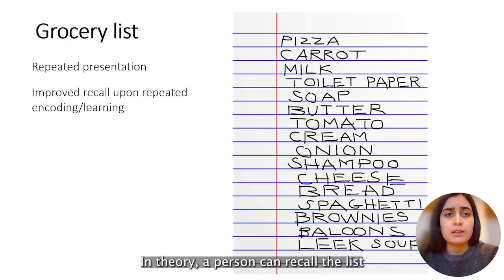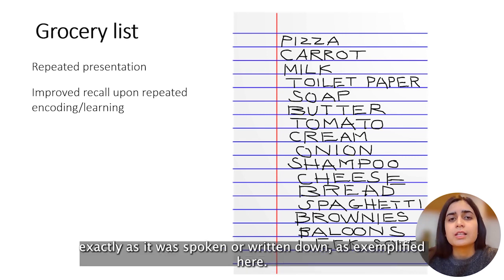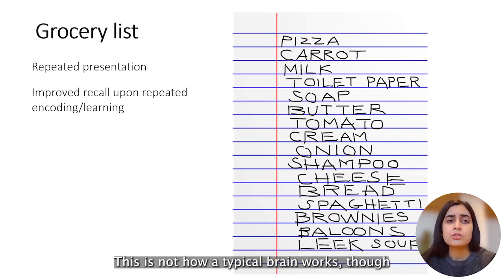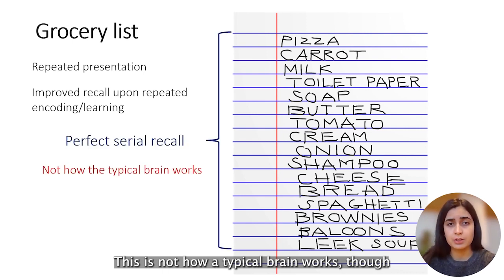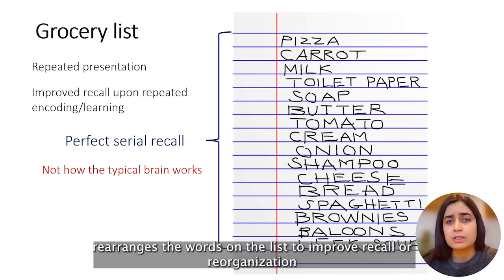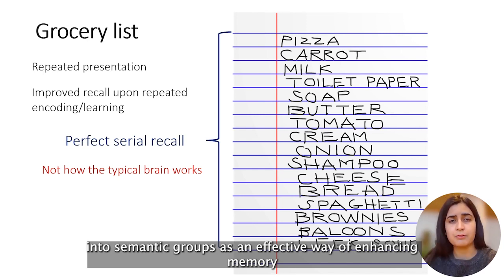In theory, a person can recall the list exactly as it was spoken or written down. This is not how a typical brain works, though. The brain automatically rearranges the words on the list to improve recall; reorganization into semantic groups is an effective way of enhancing memory.